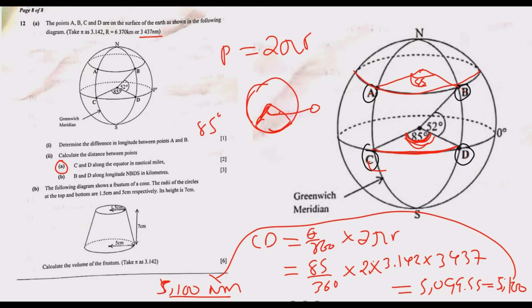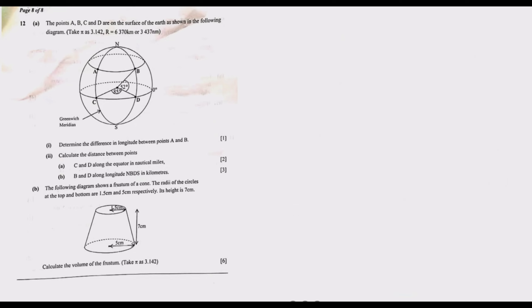Part B is asking us to find the distance between B and D. This is along the longitude. A longitude is a complete circle, which has the entire radius of the earth. This one is asking us in kilometers. So we use the same formula, similar formula.